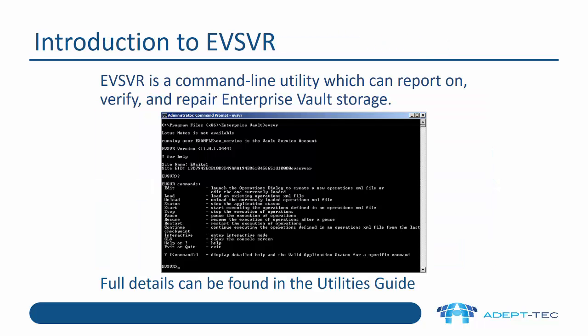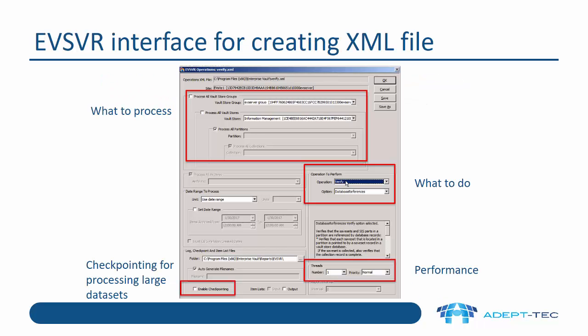So let's talk a bit about EVSVR. It stands for Enterprise Vault Storage Verify and Repair, and it's a command line utility which will report on, verify and repair Enterprise Vault storage. It's important to understand that full details about this tool can be found in the Enterprise Vault Utilities Guide. I strongly recommend that if you're going to run this tool, you read the documentation carefully before you proceed — there's a lot of information in there about best practice. When you run up the tool, you need to be logged on as the Vault Service account and run the command prompt as administrator. The first thing you're going to type is 'edit', and you'll get the operations interface come up. What we're doing is selecting what we want to process and what we want to do, and those settings are going to be saved in an XML file, which is then going to be fed back into EVSVR for processing.